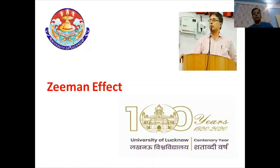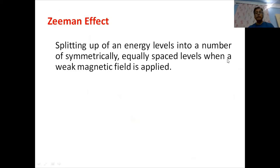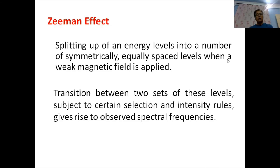Hello, I am Professor N.K. Pandey and today I am going to speak on the Zeeman effect. We know that the p level is split into two sub-levels, p₃/₂ and p₁/₂, because of spin-orbit interaction. These levels will further be split into multiple levels if subjected to a weak magnetic field. The splitting of an energy level into a number of symmetrically equally spaced levels when a weak magnetic field is applied is what we call the Zeeman effect. Once the levels are split, transitions between the two sets of levels, subject to certain selection and intensity rules, give rise to observed spectral frequencies.